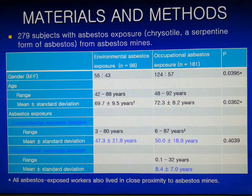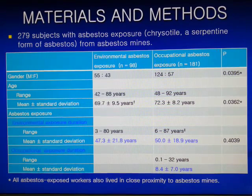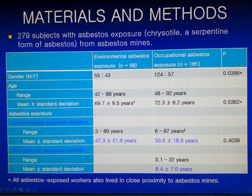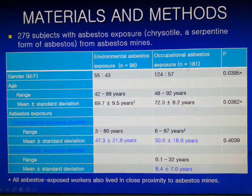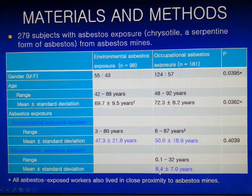This study enrolled 279 subjects with asbestos exposure from asbestos mines. There were 98 with environmental exposure who were residents living within 4 km of asbestos mines, and 181 with occupational asbestos exposure. These people were also residents, so they were also environmentally exposed. The mean duration of environmental exposure was around 50 years, and the occupational exposure duration ranged from 1 to 32 years, with a mean of 8.4 years.